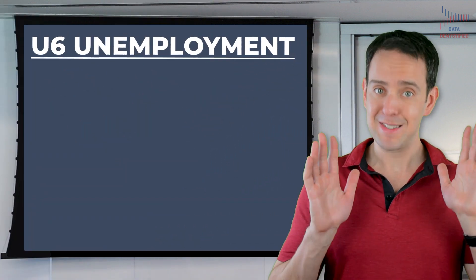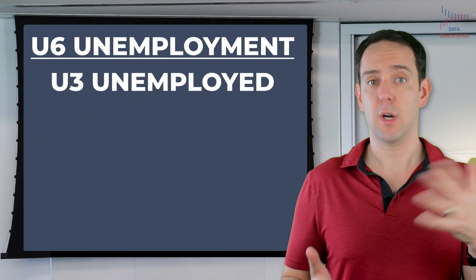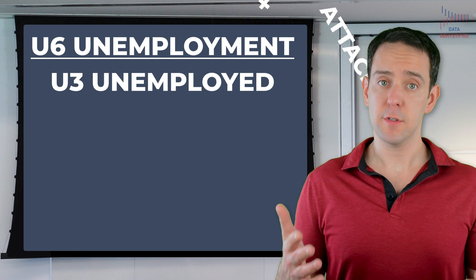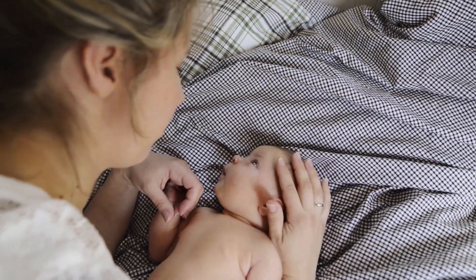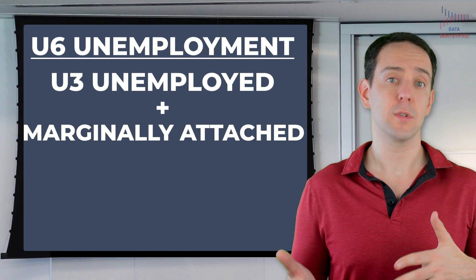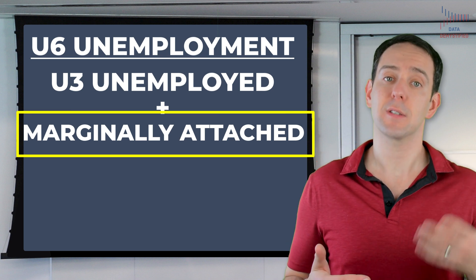This measure, gathered from that same 60,000-person sample, includes everyone in U3 unemployment — those who are unemployed and actively looking for work — but it also includes three other groups of individuals. First, it includes what are called marginally attached workers. These are workers who are ready and willing to work, but for whatever reason, haven't looked for work in the previous four weeks. This would be our mother who has chosen to temporarily stay home to ride out the COVID-19 pandemic. She can work and would love to, but has chosen not to search for work right now. She, along with people like her who choose to go back to school or who can't work because they are disabled, would be included in U6 unemployment.